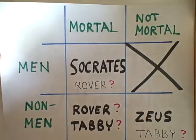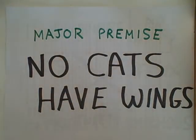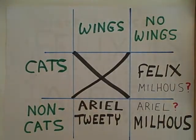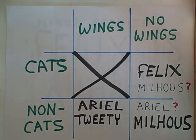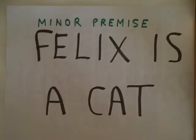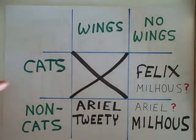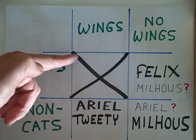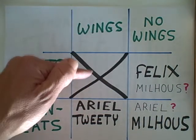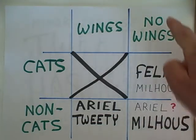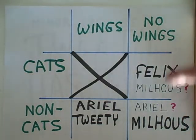The 2x2 contingency table can also be used with 'no' statements, such as: no cats have wings. Our table will have one row for cats, one row for not-cats, one column for wings, and another column for no wings. Here's our minor premise: Felix is a cat. Where do we put Felix? There's a big empty slot because no cats have wings, so we can't put Felix in the wings column. Felix must therefore be in the no-wings cell. If Felix is a cat, Felix has no wings.